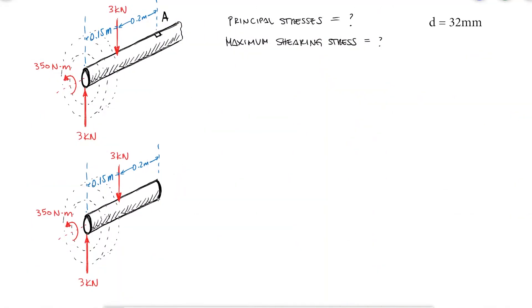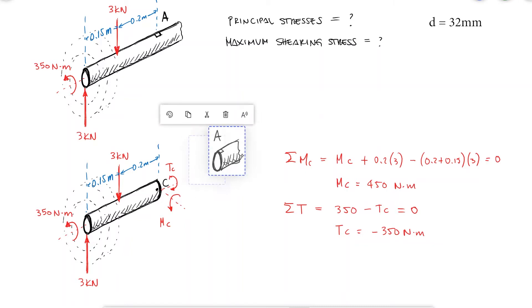If we perform a cut just before A, we'd see that from a sum of moments about the cut, the internal moment would be 450 Nm, and from a sum of torques, the internal torque is 350 Nm. The reactions affecting A, the other side of the cut, would have the same values but opposite direction.